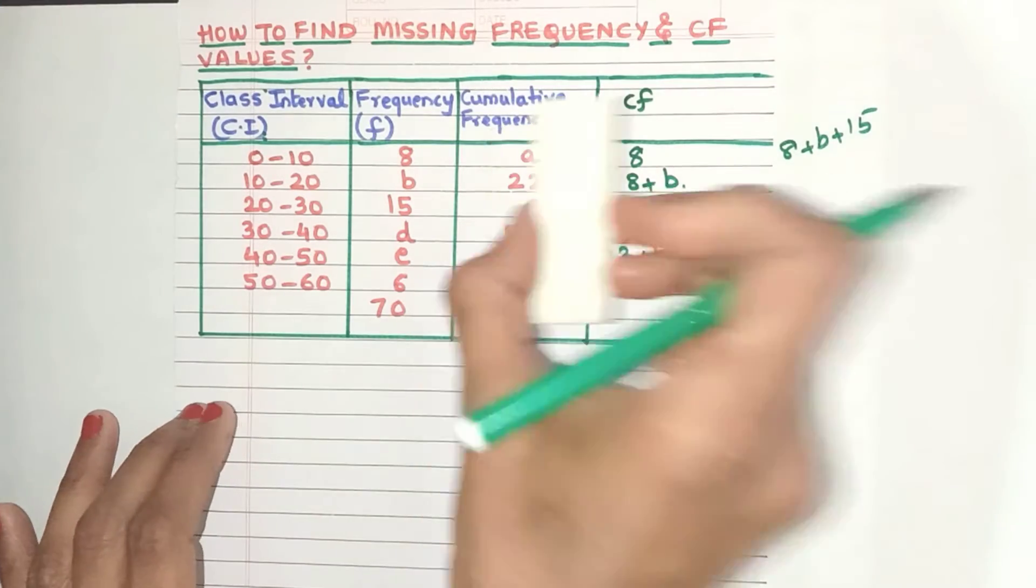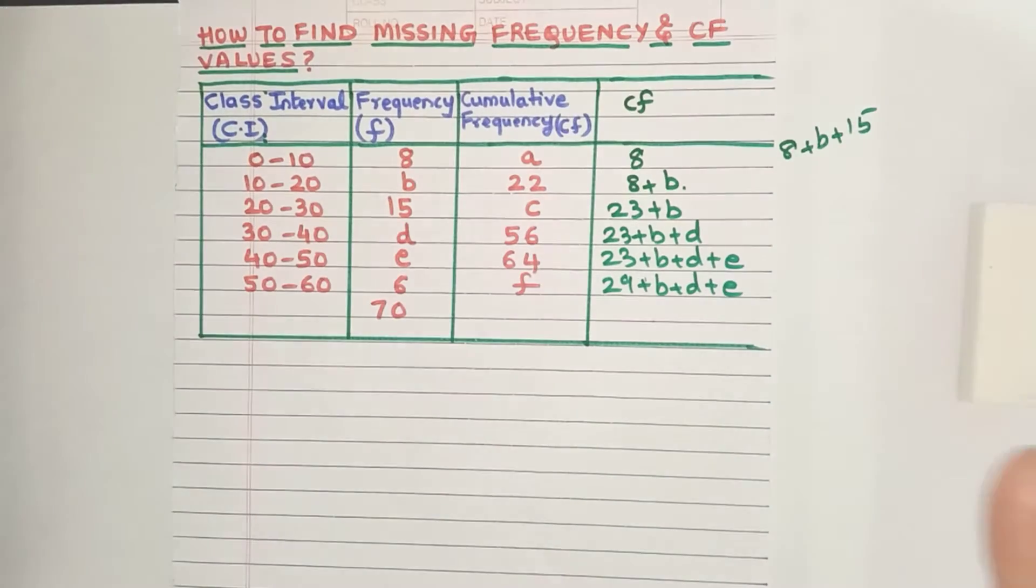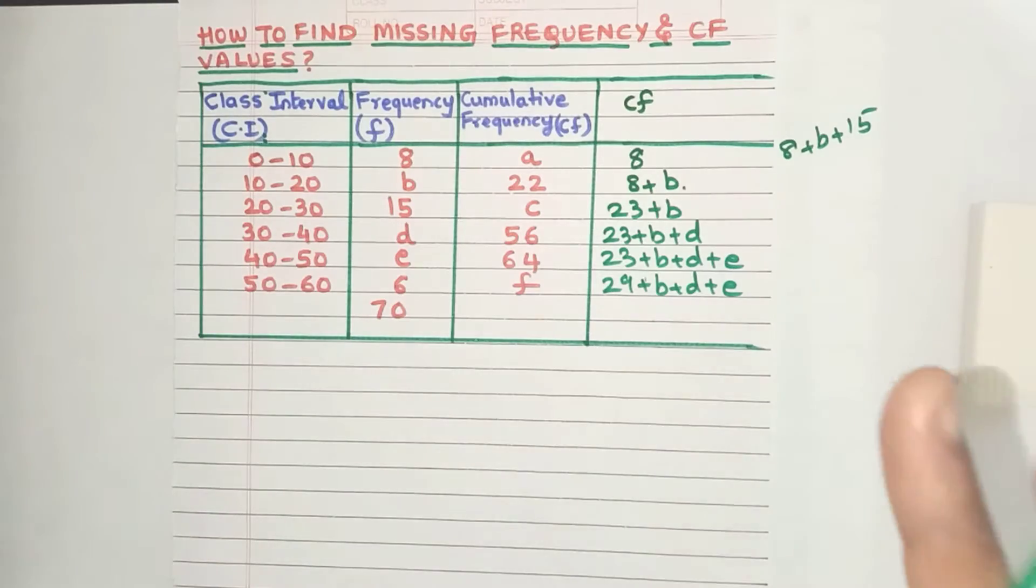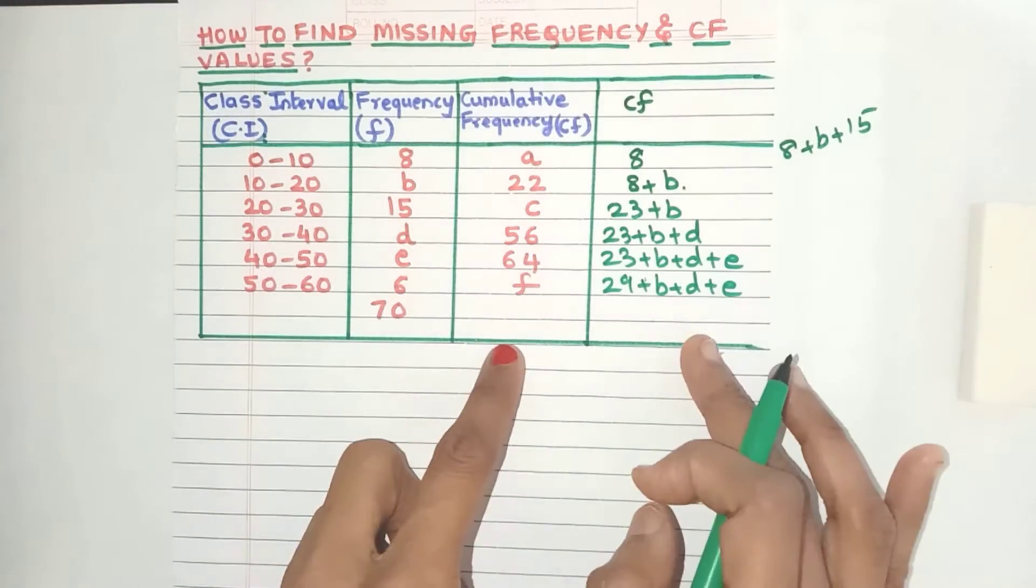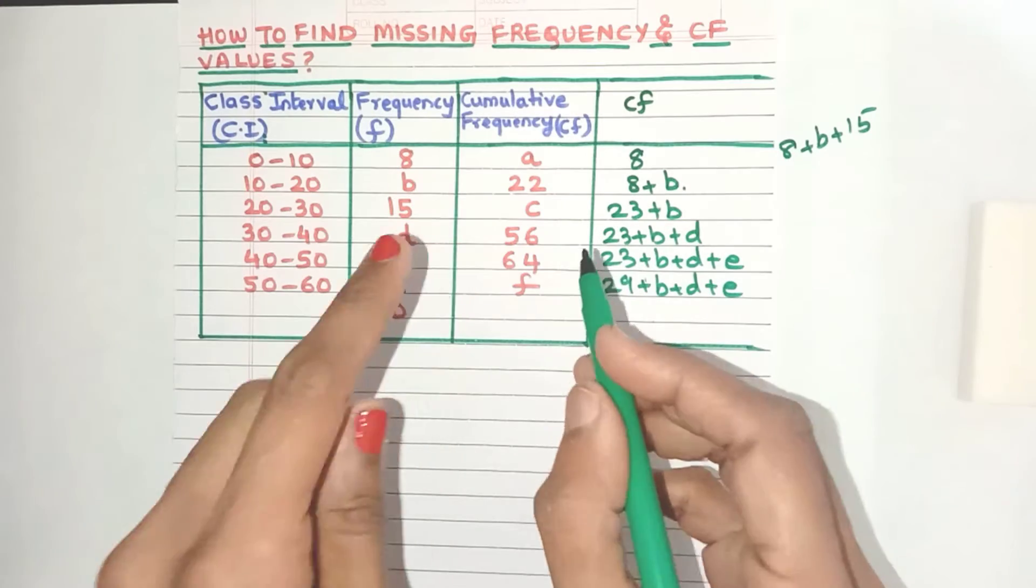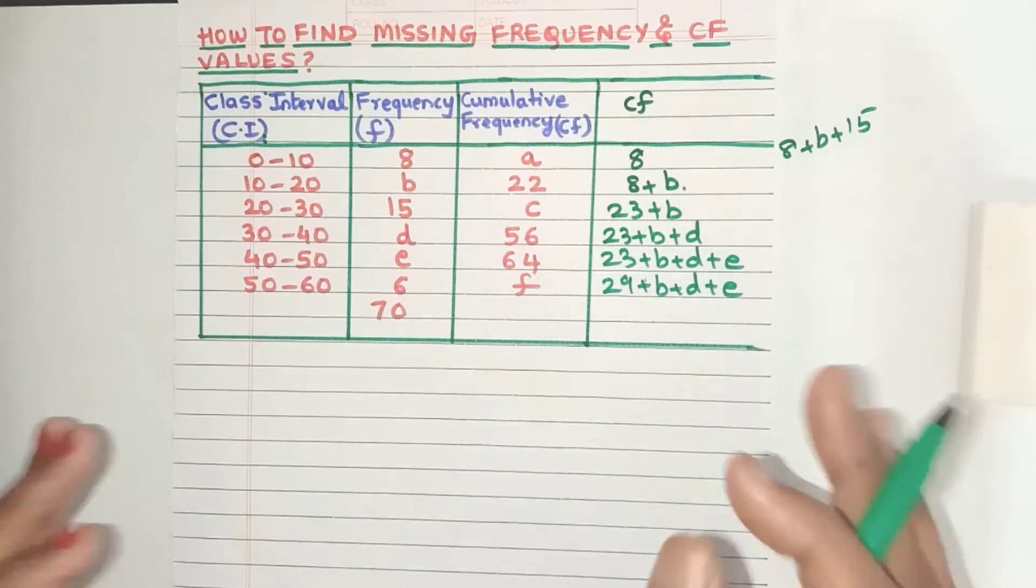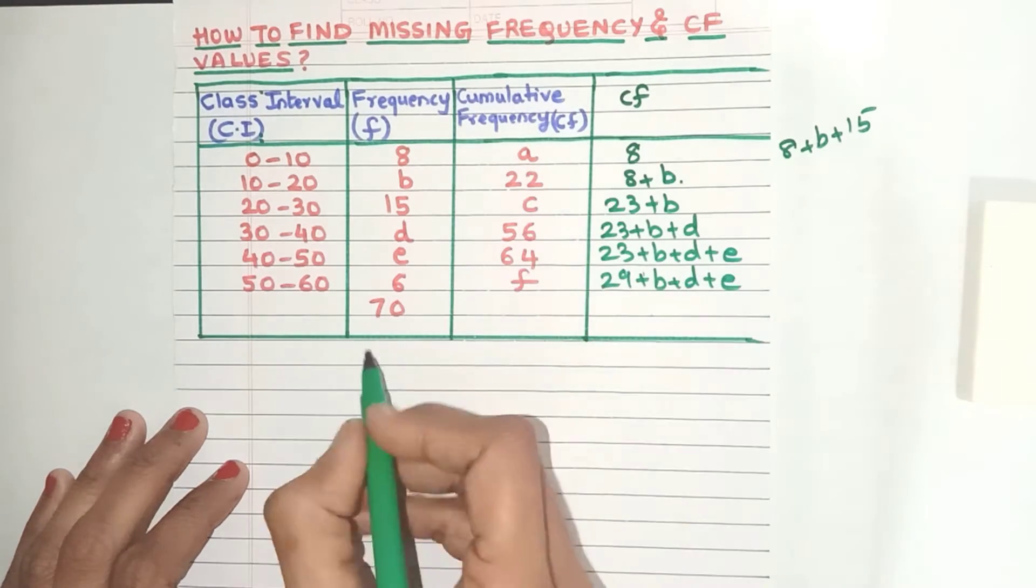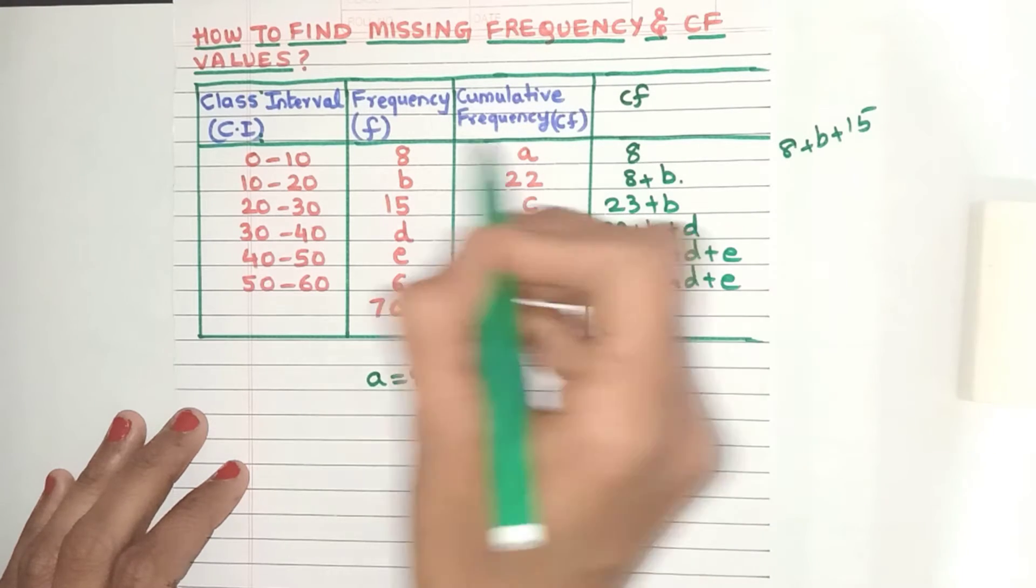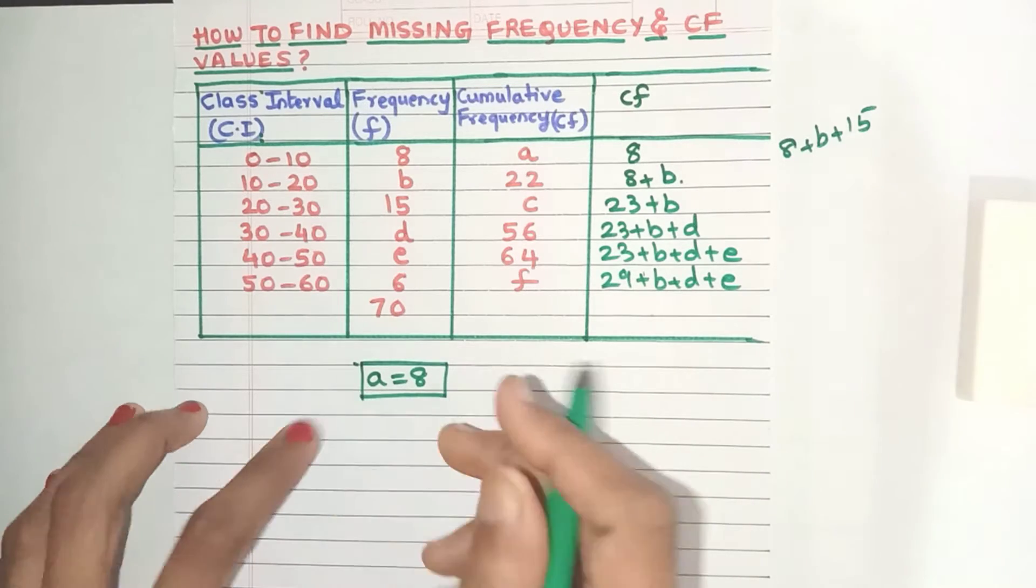Let's now compare both these CF columns. Now can I say that both these CF columns are going to be equal? Yes, definitely, because these columns have been created from the same frequency values. So they have to be equal. So can we equate the values from both the columns? Yes, definitely we can. So from the first class interval can we say that A is equal to 8? Yes, because they are the same CF values. So straight away we have got the value of the first unknown.